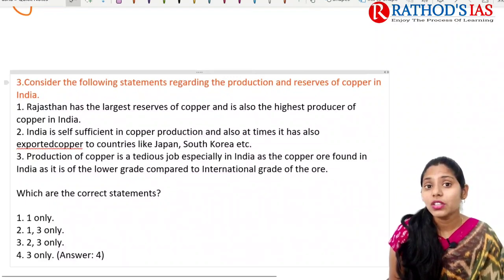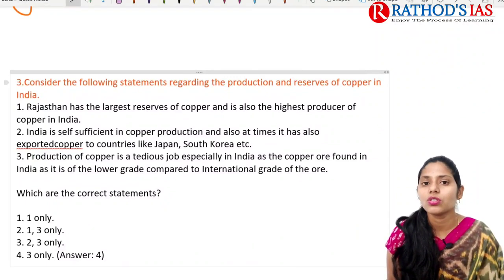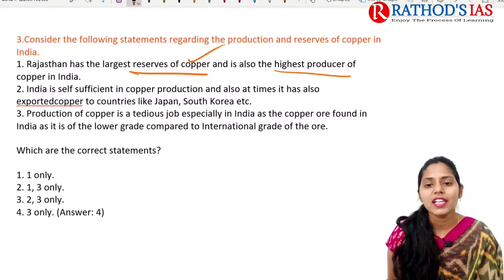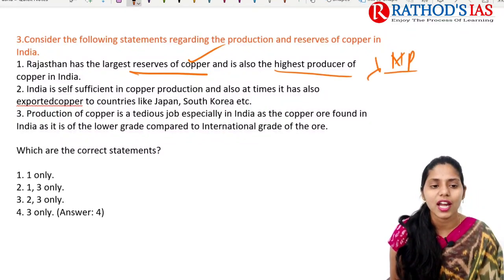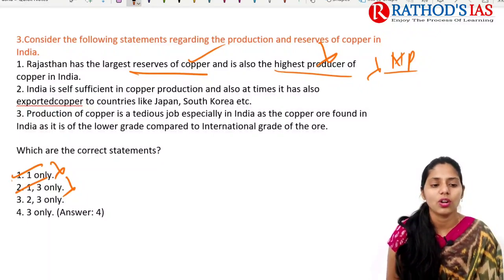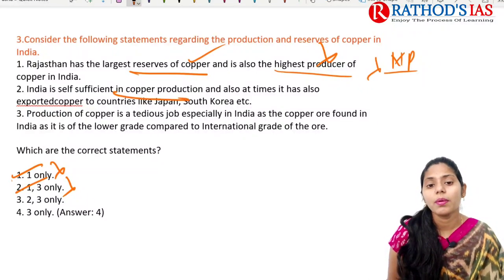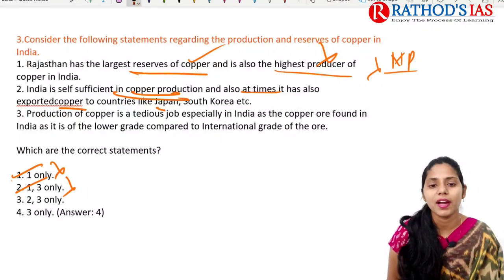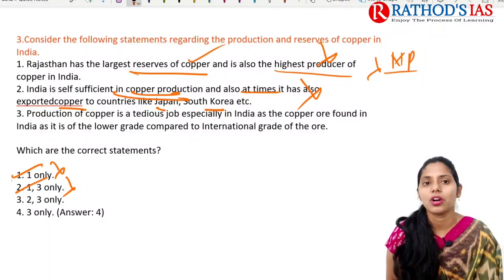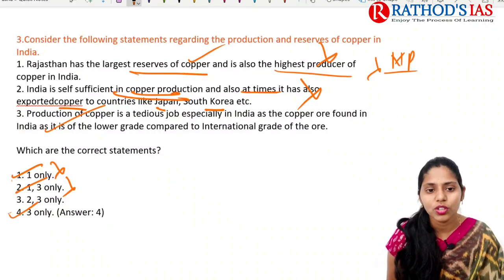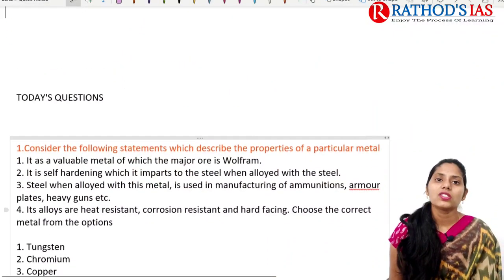The third question is about copper production and reserves in India. Rajasthan has the highest reserves of copper — this is correct. However, Rajasthan is not the highest producer; Madhya Pradesh is. Since India imports copper from countries like Japan and South Korea, it is not self-sufficient. The correct answer is option three only — option four is the correct answer.